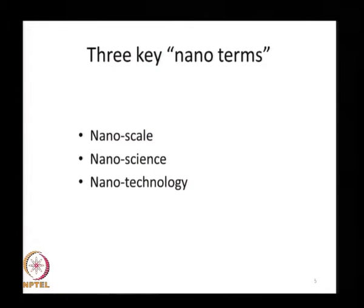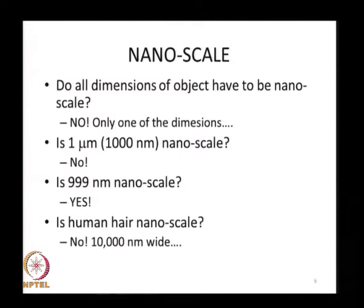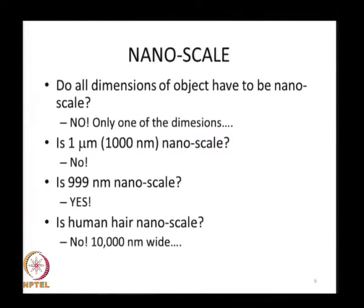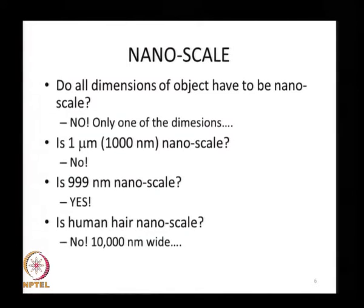There are three key nano terms: nano scale, nano science, and nano technology. When we say nano scale, we do not mean that all dimensions must be in the nano range — as long as one dimension is in the nano scale, we can consider it a nano object. Conventionally, 1 micron is not considered nano scale, but 999 nanometers is — though the boundary is not perfectly clear.